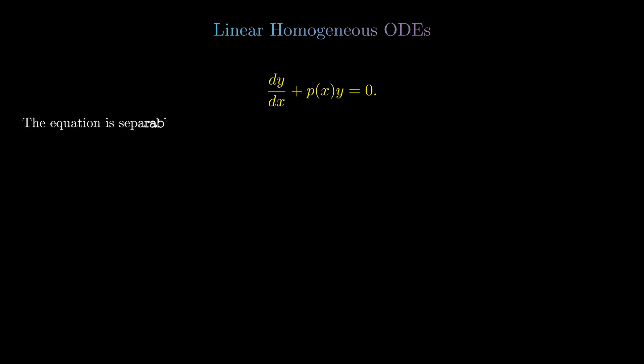The equation is separable, so what we can do is multiply every term by dx, in which case we see that dy + p(x)y dx = 0. If we then divide by y, we get dy/y + p(x)dx = 0.